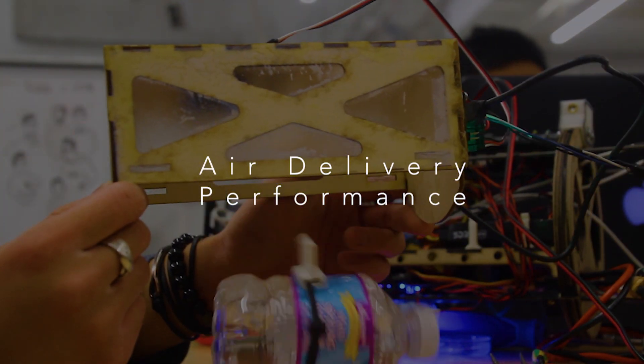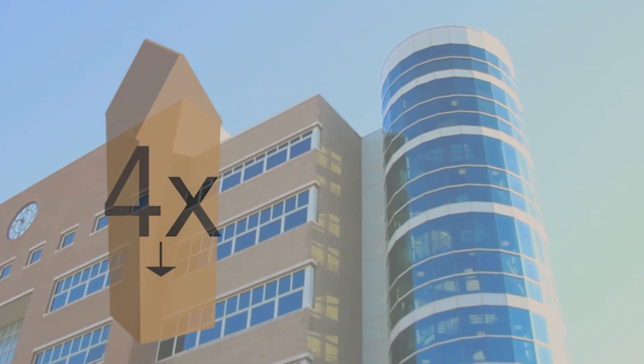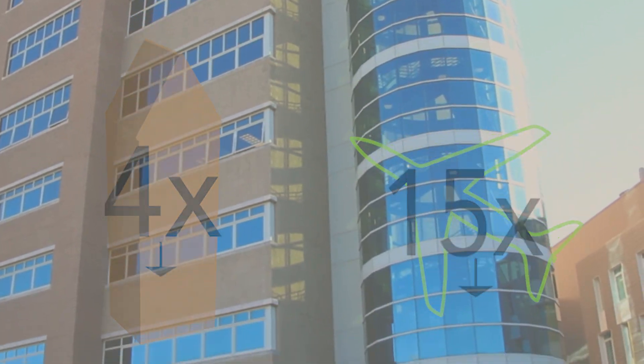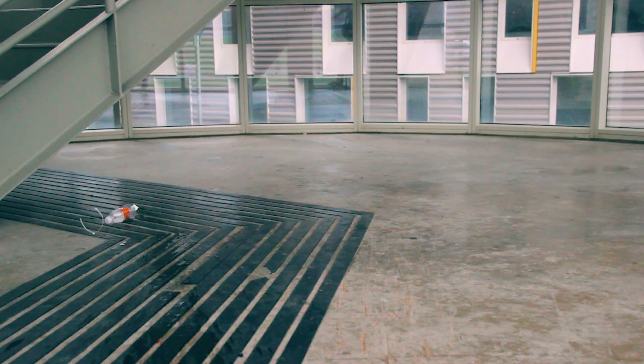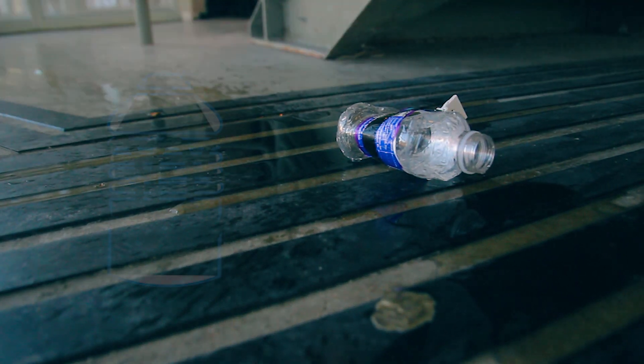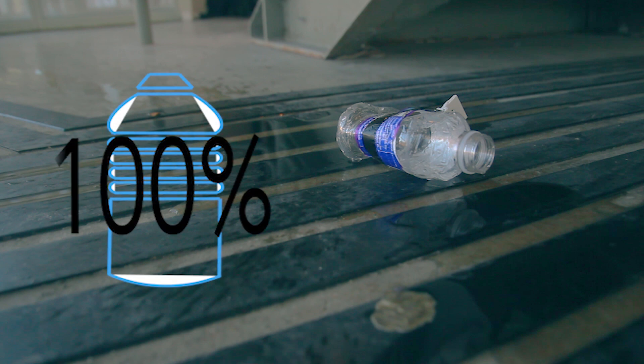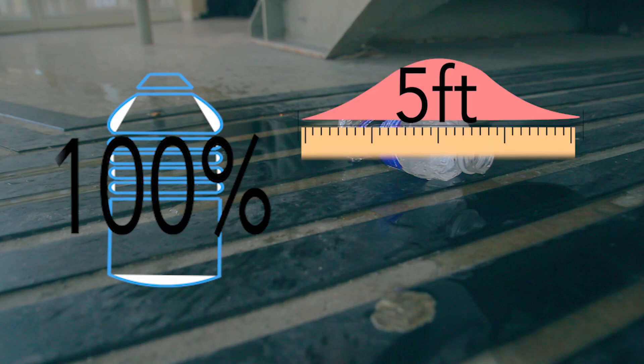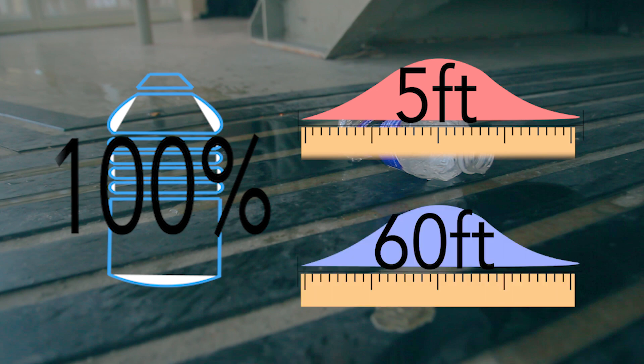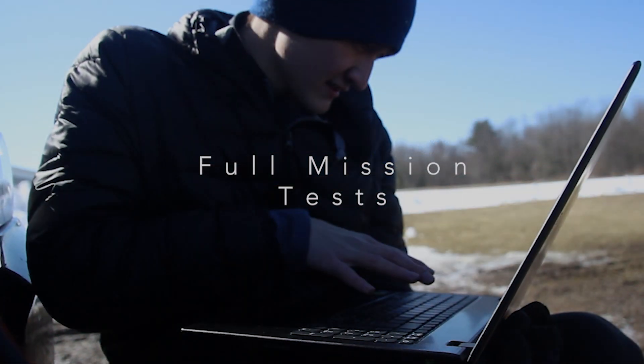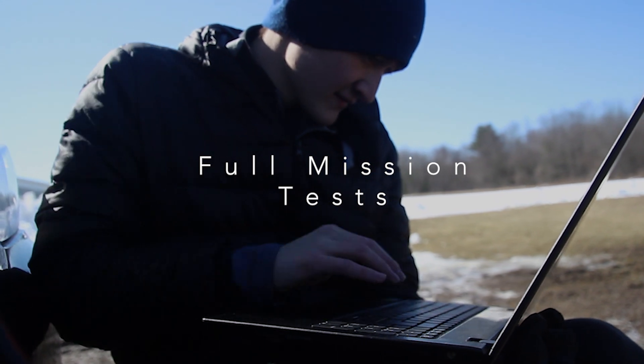The air delivery system has been tested at Cornell's drop tower four times and on the aircraft 15 times. From both the drop tower and the aircraft, the payload opened and dispersed water 100% of the time. The payload landed an average distance of 5 feet from the target spot in the drop tower and consistently within 60 feet from the target during full mission tests.